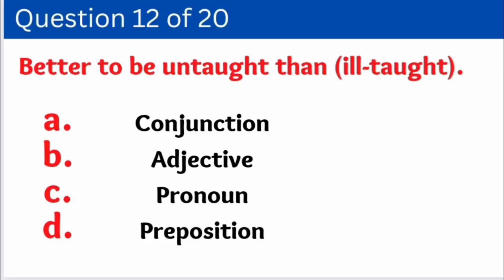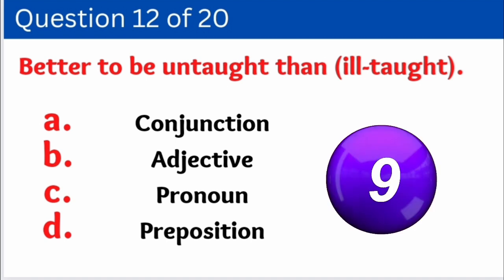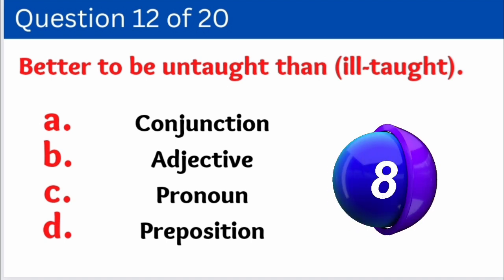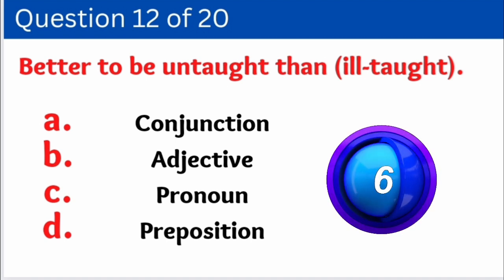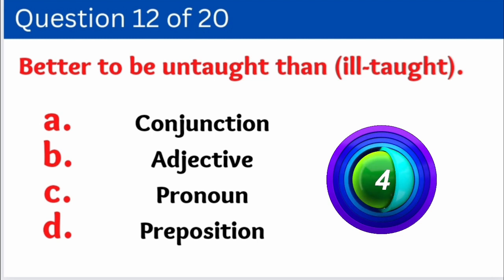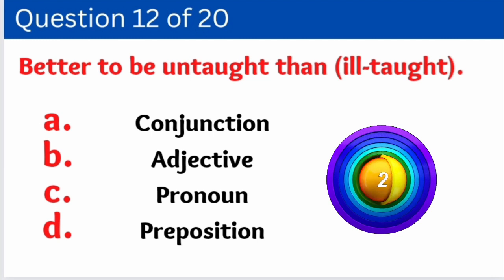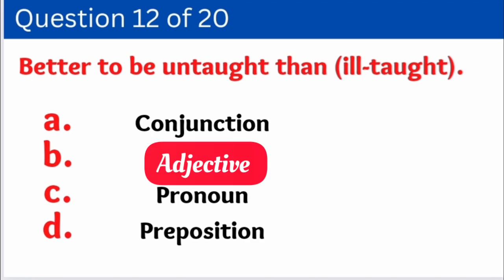Question number twelve: 'Better to be untaught than ill taught.' Here we have to identify how 'ill taught' is used. Options are: A. Conjunction, B. Adjective, C. Pronoun, D. Preposition. And the correct answer is option B — Adjective.